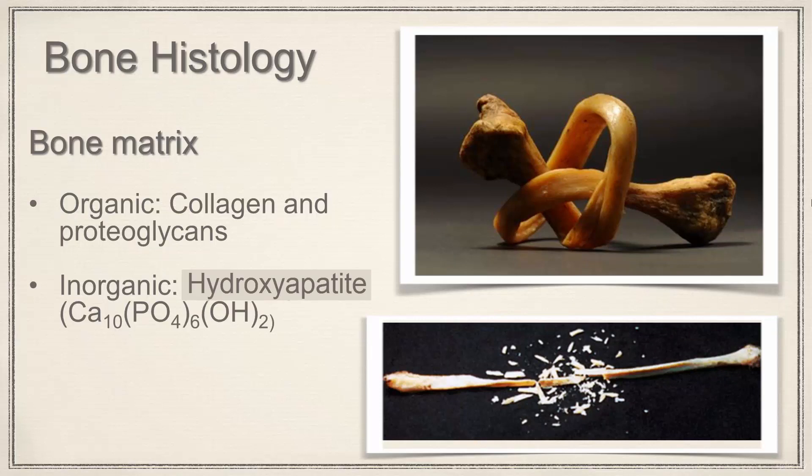On the other hand, if we take a bone and we bake it and bake out all that organic component, it's going to be very rigid and very brittle. If we smack it on a table, it'll just shatter. This is very important because our bones need to have a little bit of flexibility to it. It needs the flexibility of the organic components and the rigidity of the inorganic components.